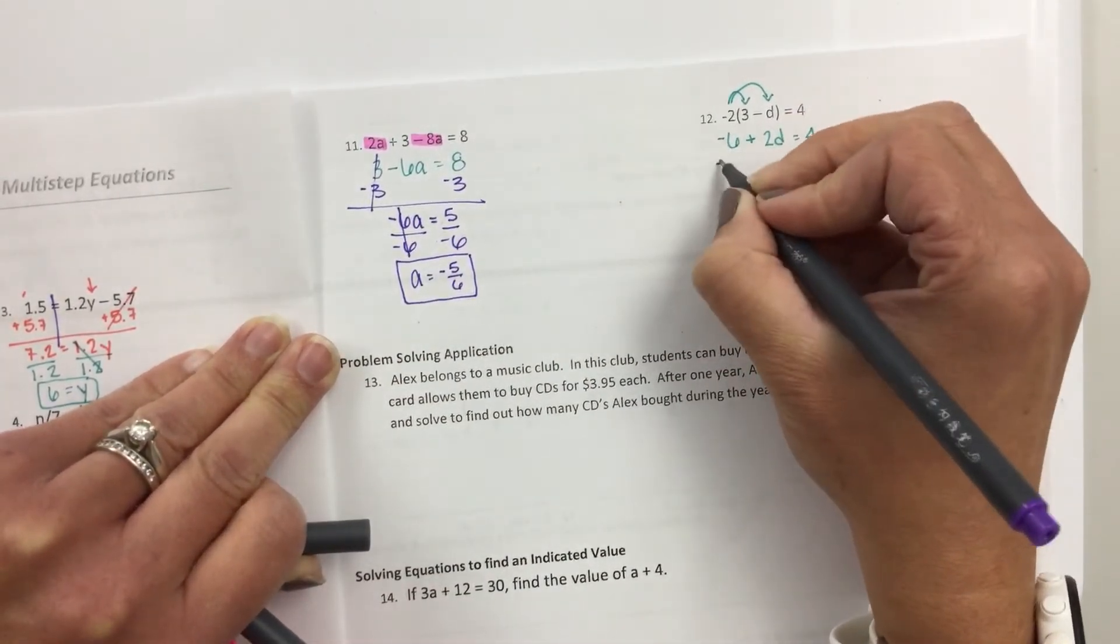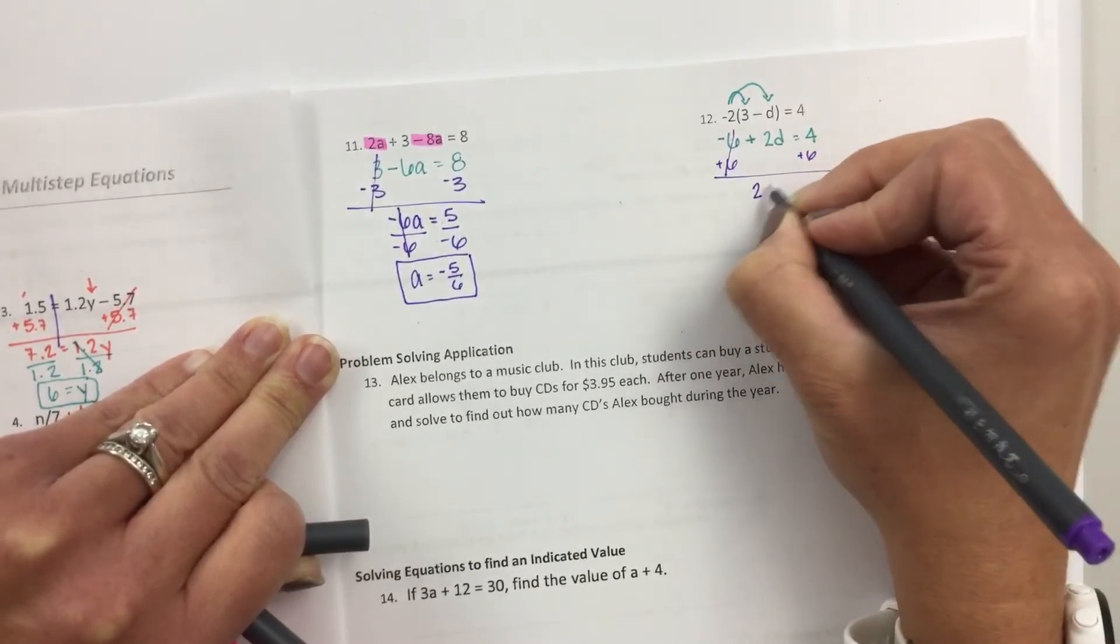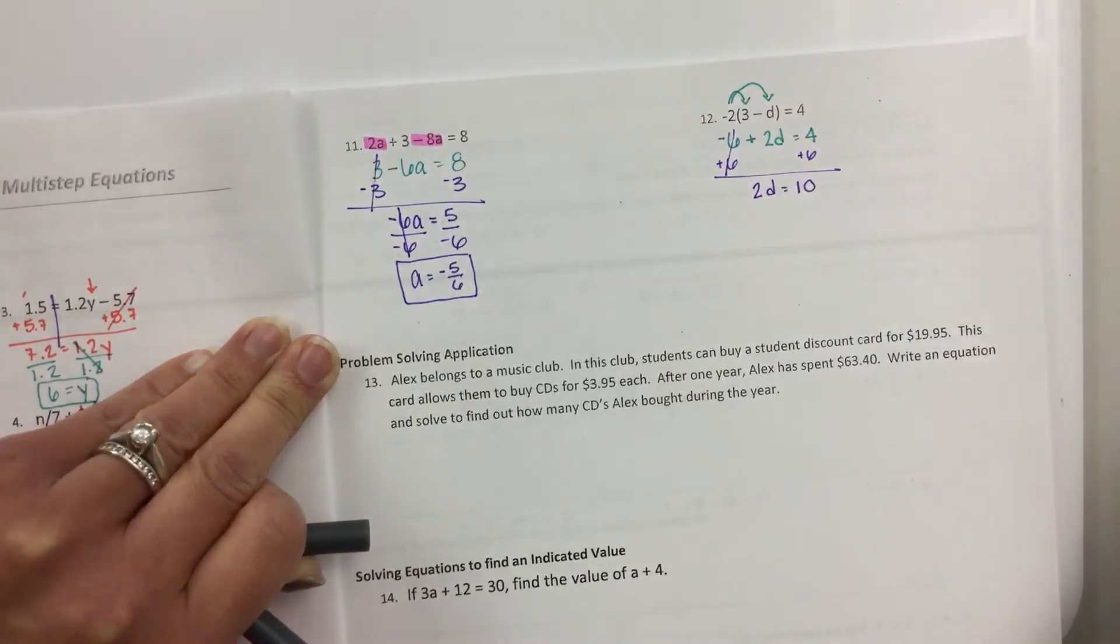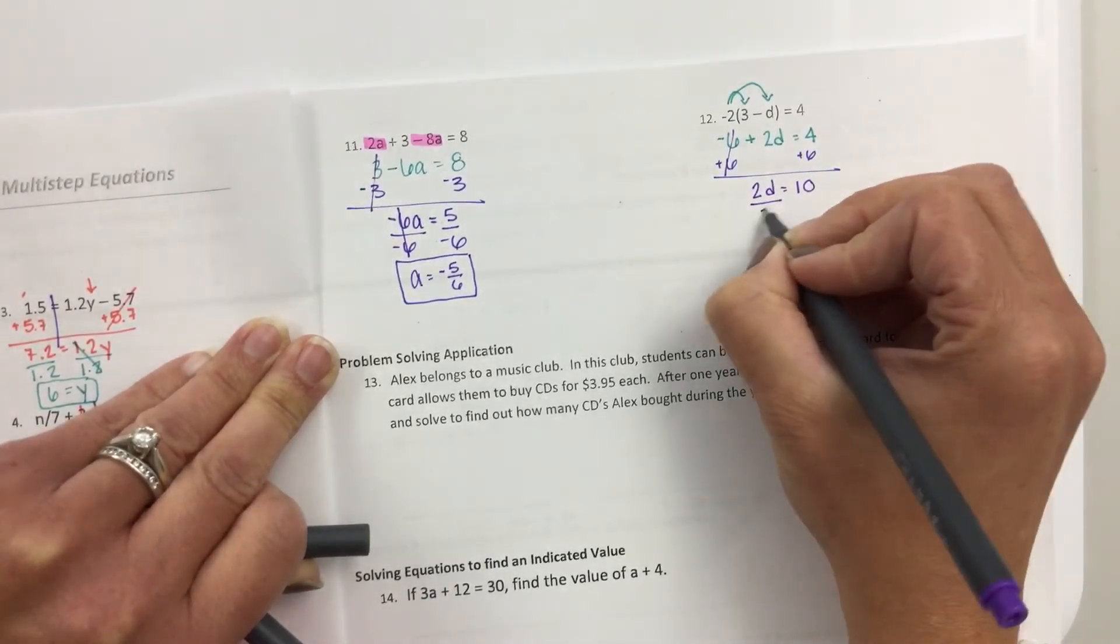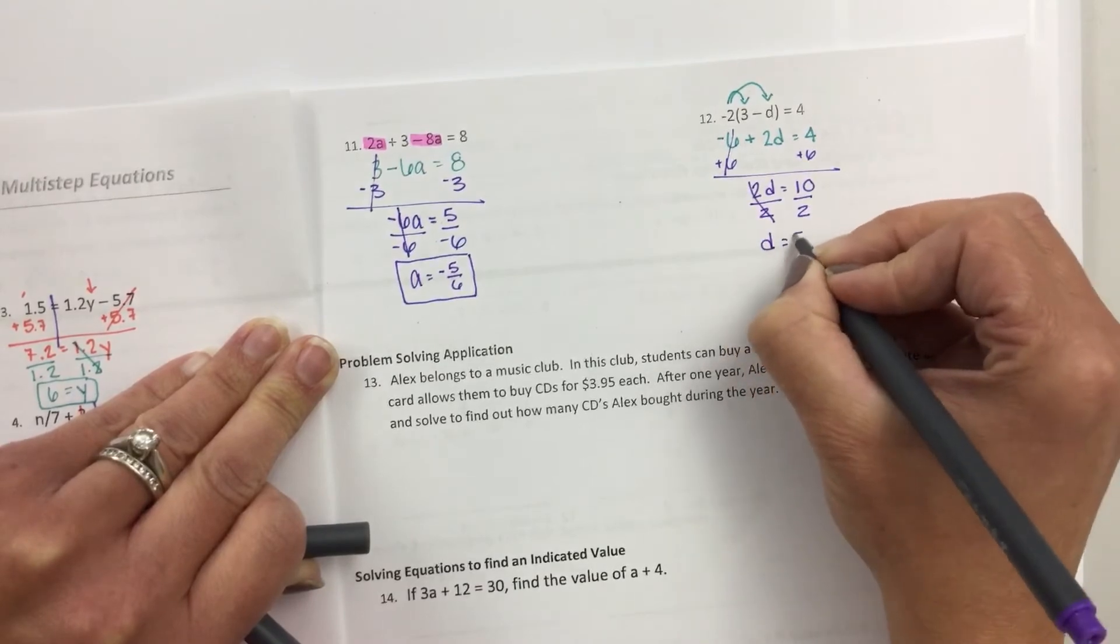And this one, I'm going to move the 6 first by addition. 2d equals 10. Divide both sides by 2. d equals 5.